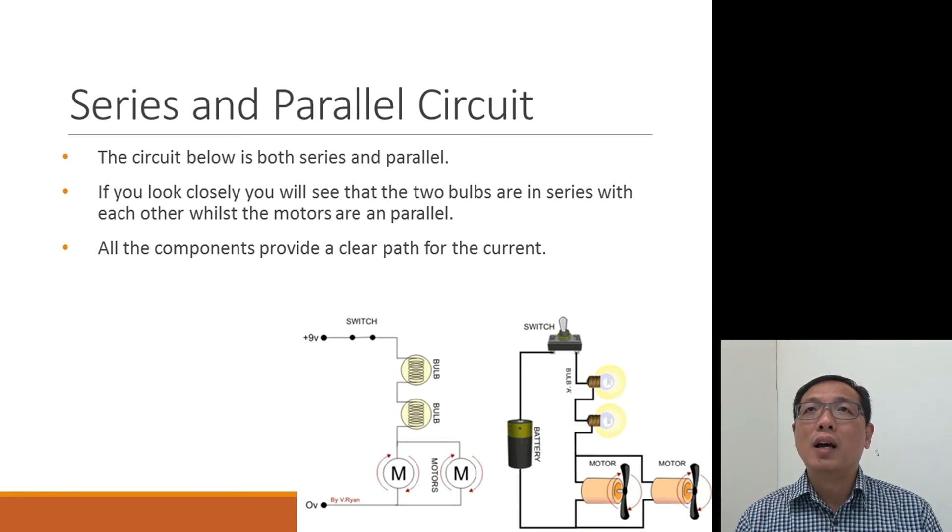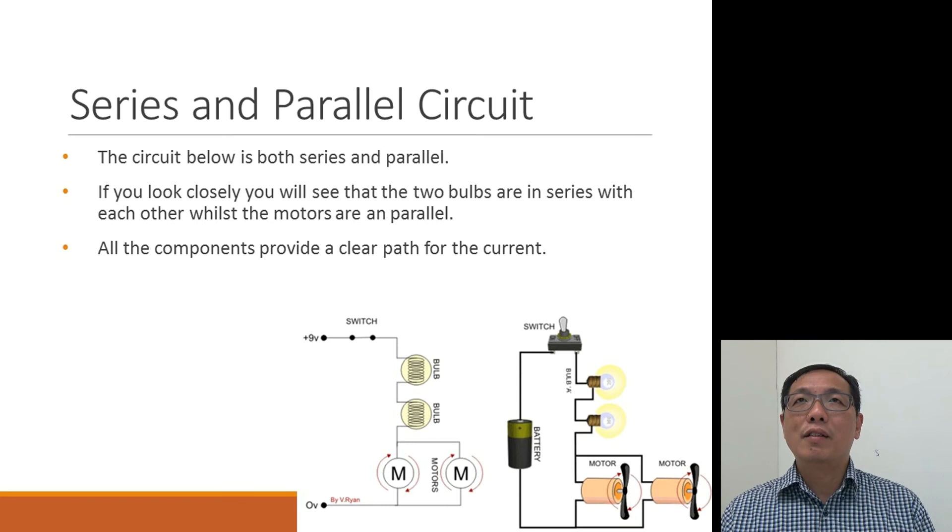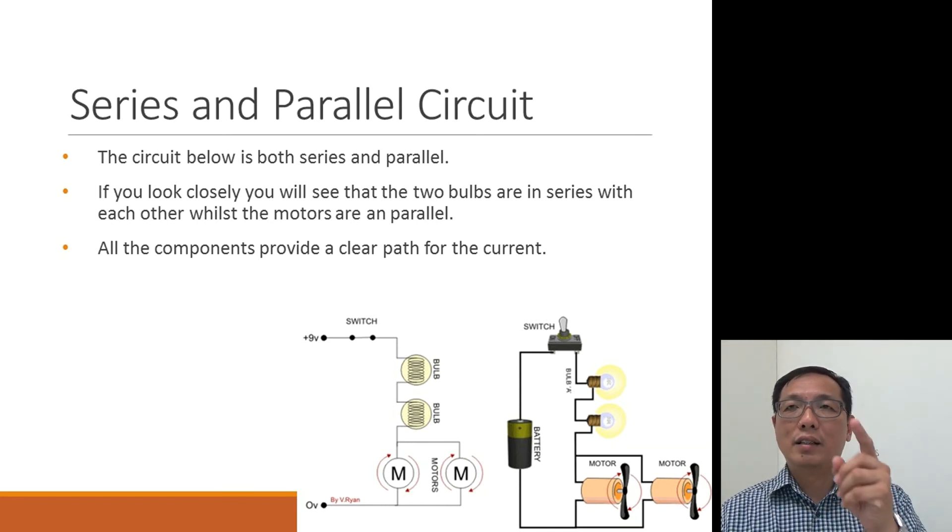This case here, if bulb A is blown, the whole circuit will fail. It won't work. What happened if both motors are blown? Then the whole circuit will also fail. So, as long as you don't see a clear flow of clear direction to flow, the whole circuit will fail.